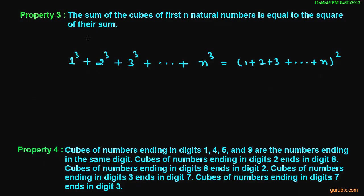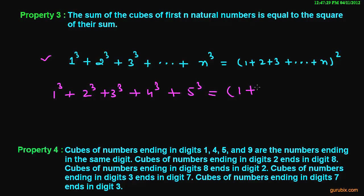Let us move to property number 3: the sum of cubes of first n natural numbers is equal to the square of their sum. Suppose we want to calculate the sum of cubes of first 5 natural numbers — this means 1³ + 2³ + 3³ + 4³ + 5³. We can calculate this sum using this formula by adding these numbers and calculating the square of the sum: 5 + 4 = 9, 9 + 3 = 12, 12 + 3 = 15.